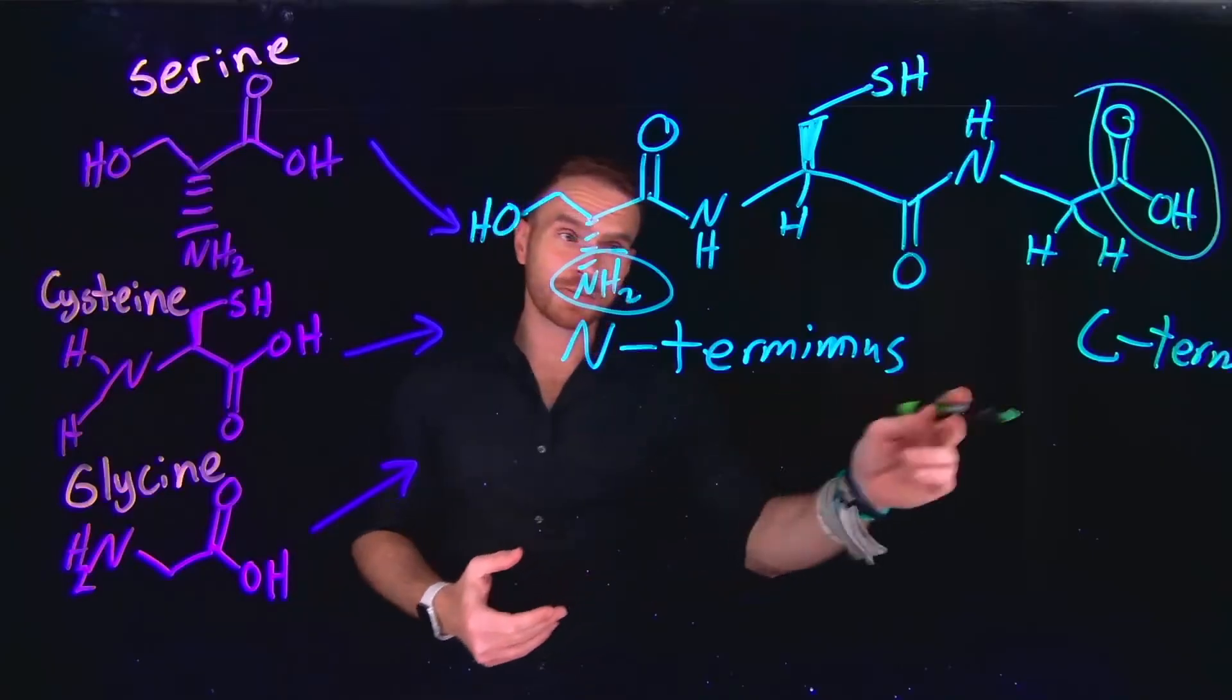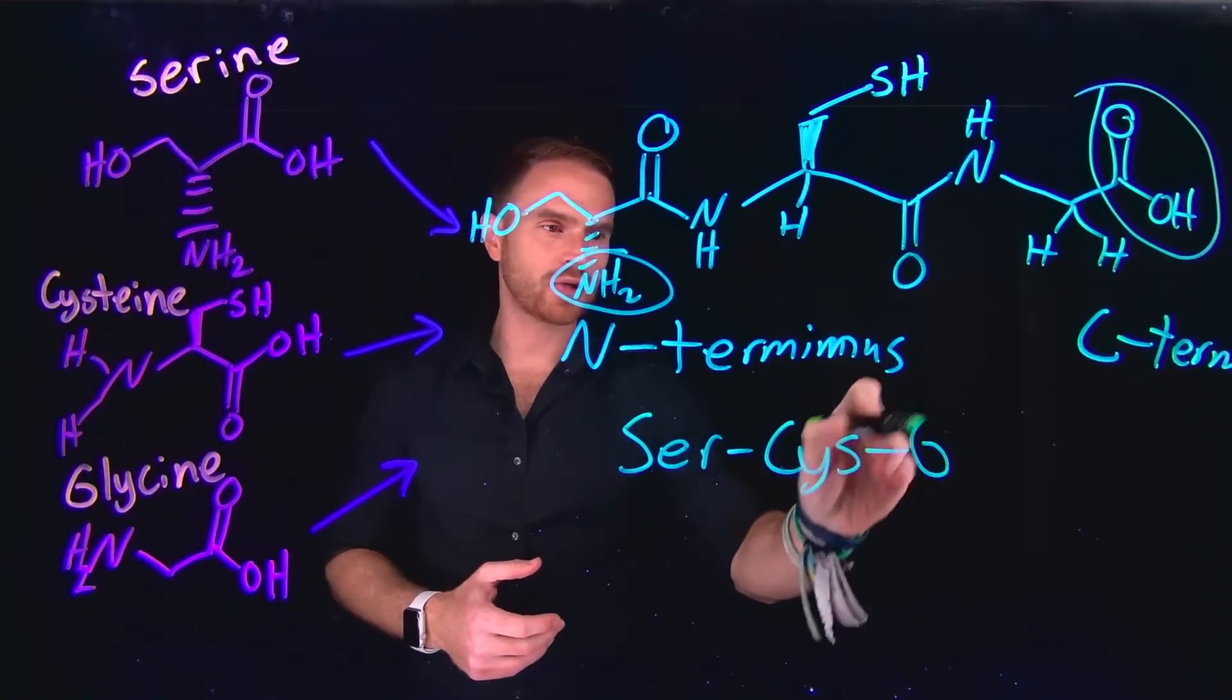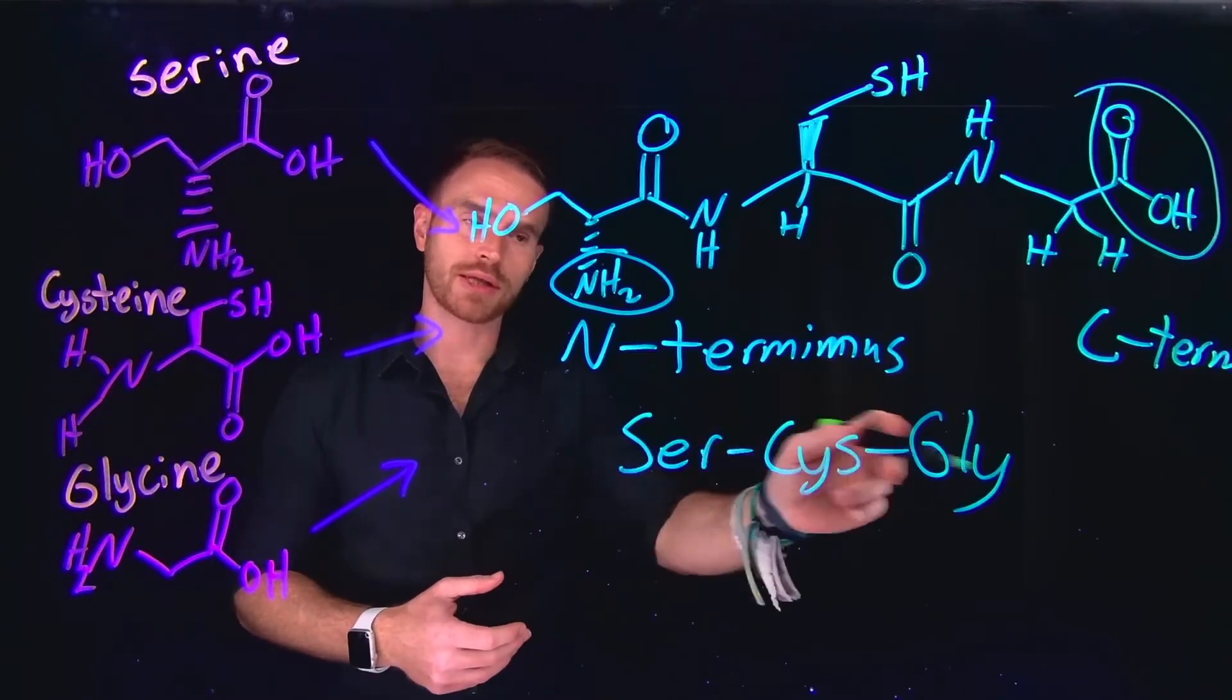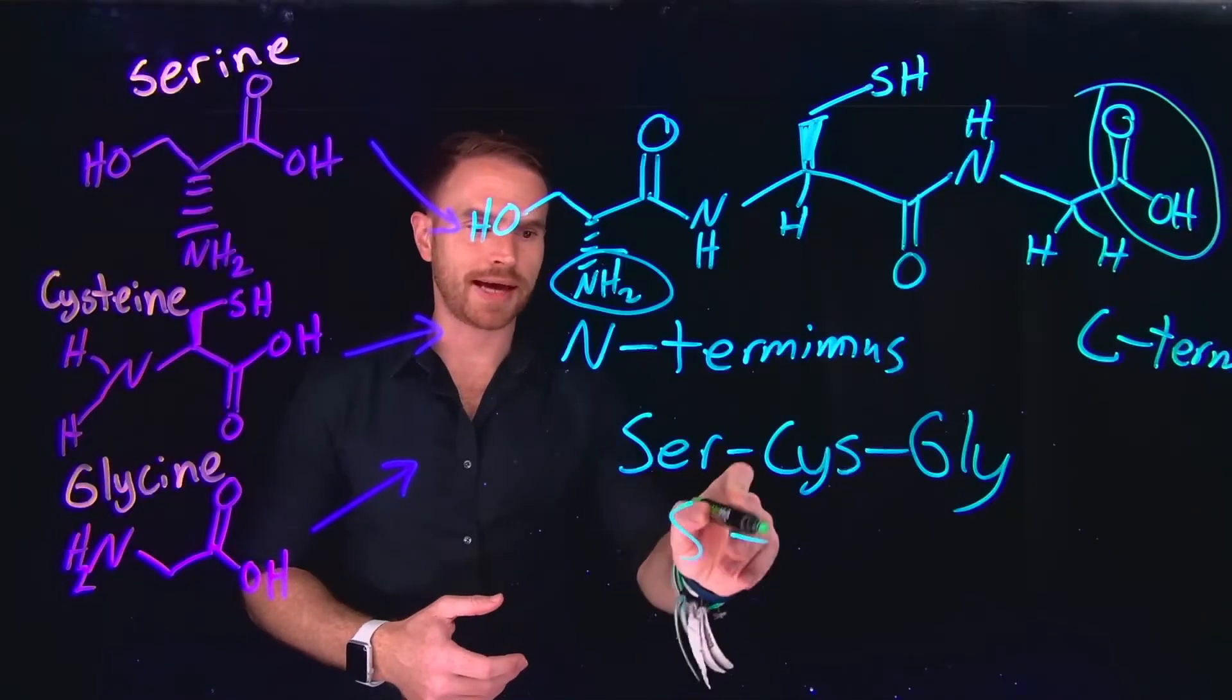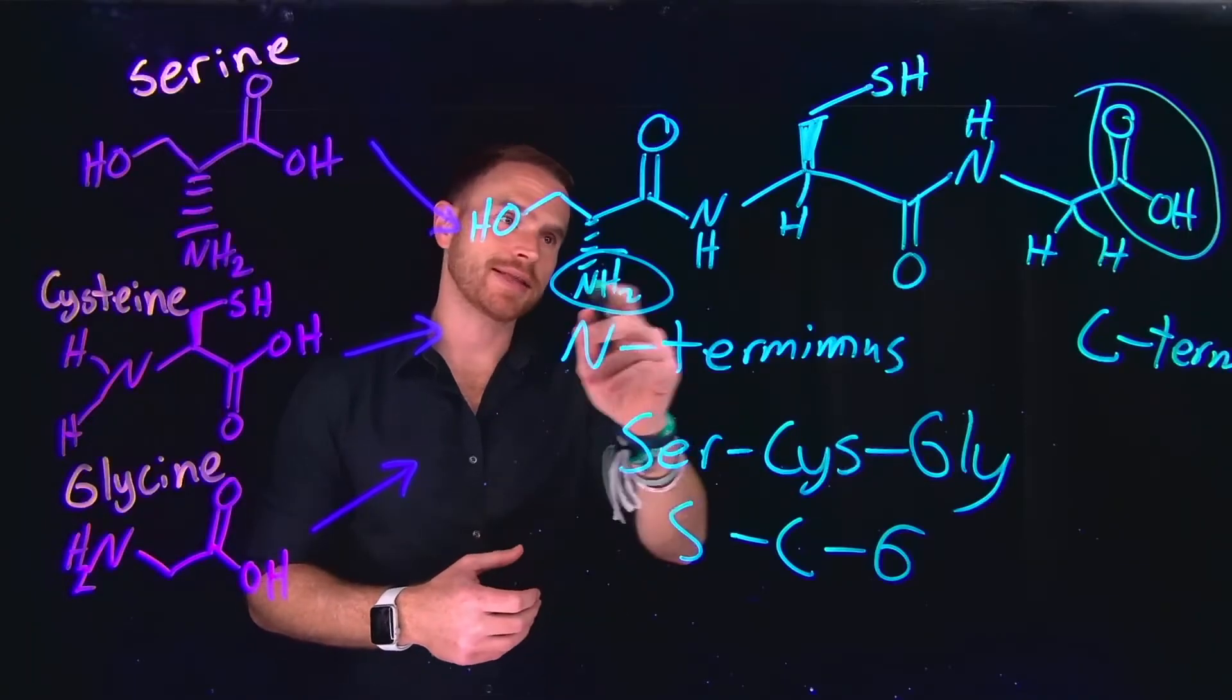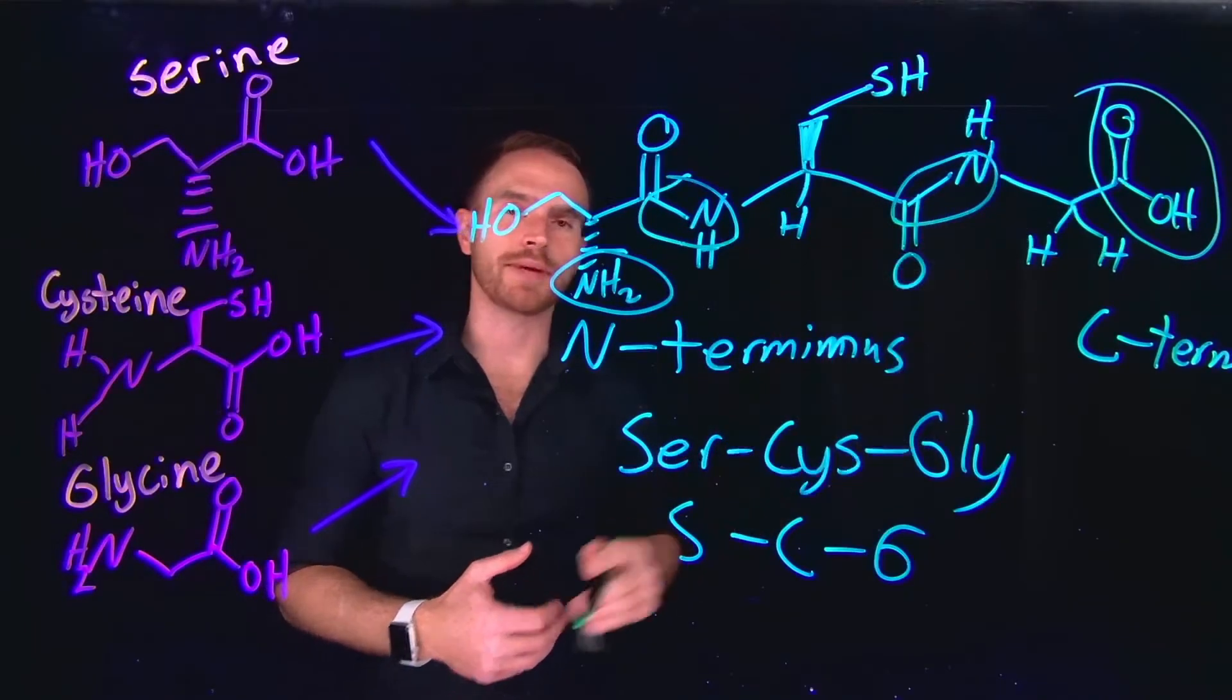So in this specific peptide, I would say that I have the serine amino acid, I have the cysteine amino acid, and then I also have the glycine amino acid. Oftentimes, you will see amino acid structures written out as their three-letter components or even their one-letter components. So in that case, it would be S-C-G for serine cysteine glycine, indicating that this is the peptide that has formed via these specific peptide bonds that are formed between these different amino acids.